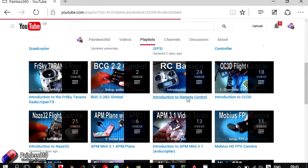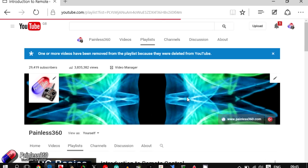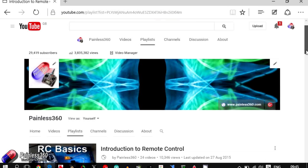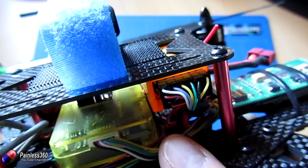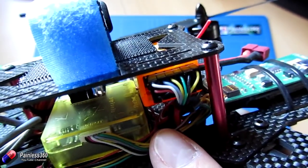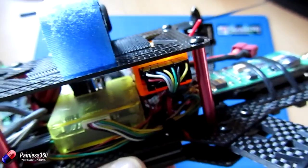There's a separate video in the introduction to RC playlist about each of these signal types. PWM - pulse width modulation - is where you connect one cable for each of the channels: throttle, rudder, elevator, aileron and the auxiliaries or gear switches. The receiver outputs a pulse in direct relation to how much control you want from that channel. That is what pulse width modulation stands for, and there's a cable connecting each of those channels on the radio receiver to each of the parts of the model that need that signal.